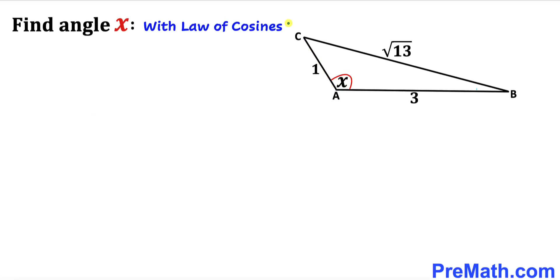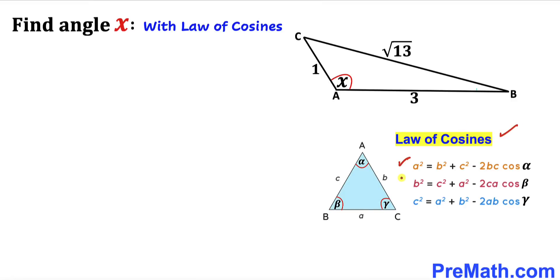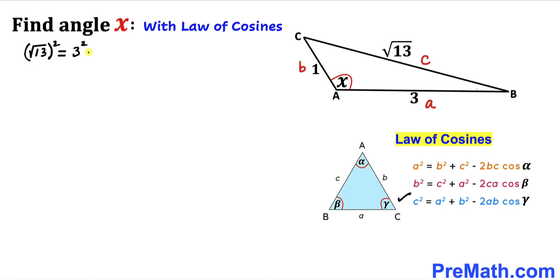Now I'm going to show you how to solve this problem using the law of cosines. Let's recall the law of cosines. Let me label this side A, this side B, and this side C, and this is our angle x. So we apply the law of cosines: C² = A² + B² − 2AB·cos(x). C in our case is √13, A is 3, and B is 1, giving (√13)² = 3² + 1² − 2·3·1·cos(x).